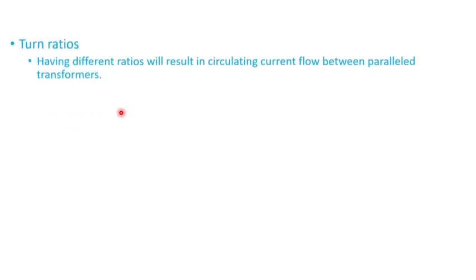So having different ratios, turn ratios, will result in circulating current flow between the parallel transformers. That's very important to remember when you have two transformers that are in parallel, whether they have a load tap changer or de-energized tap changer. It's important to have those transformers with the same turn ratio.